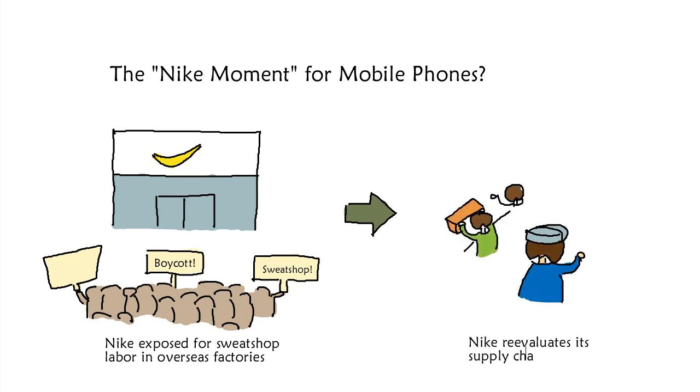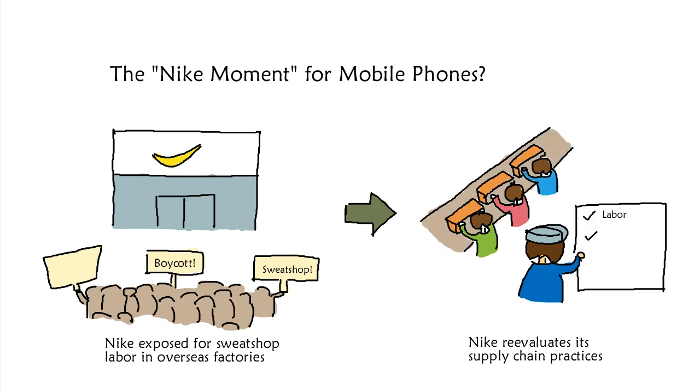But these events encouraged Nike to re-evaluate their supply chain practices. They became a member of the Fair Labor Association, and today, Nike is considered a leader, not just on labor issues, but on reducing toxic chemicals in products and using eco-materials.